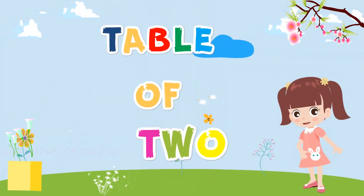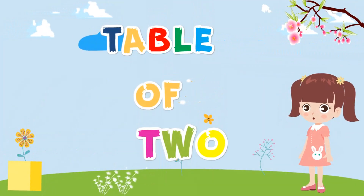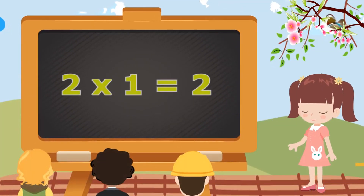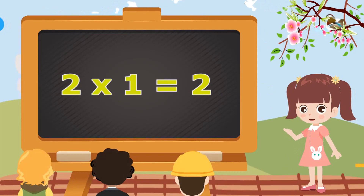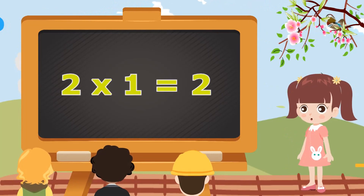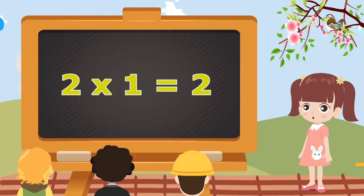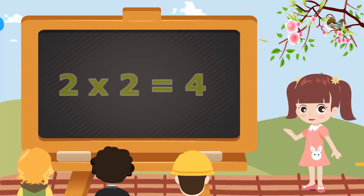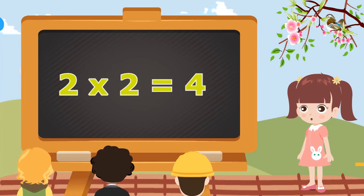Table of Two. Two, one's a two. Two, one's a two. Two, two's a four. Two, two's a four.